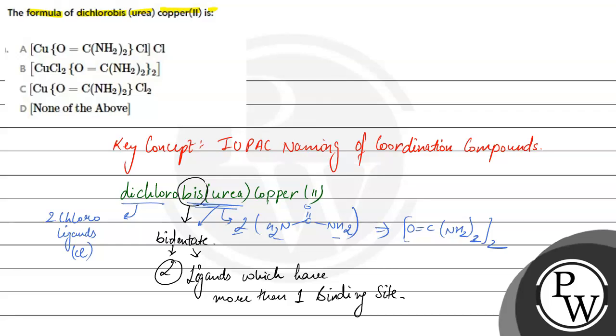And secondly, what is copper given? What is the oxidation state given? This is the oxidation state of copper. What is copper? Copper 2 positive is present. So what is the formula?